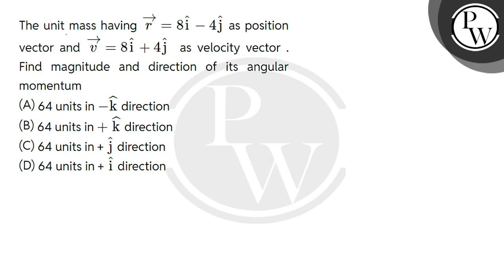Hello, let's read the question. The unit mass having r vector equals to 8i cap minus 4j cap as position vector and v vector equals to 8i cap plus 4j cap as velocity vector. Find magnitude and direction of its angular momentum.